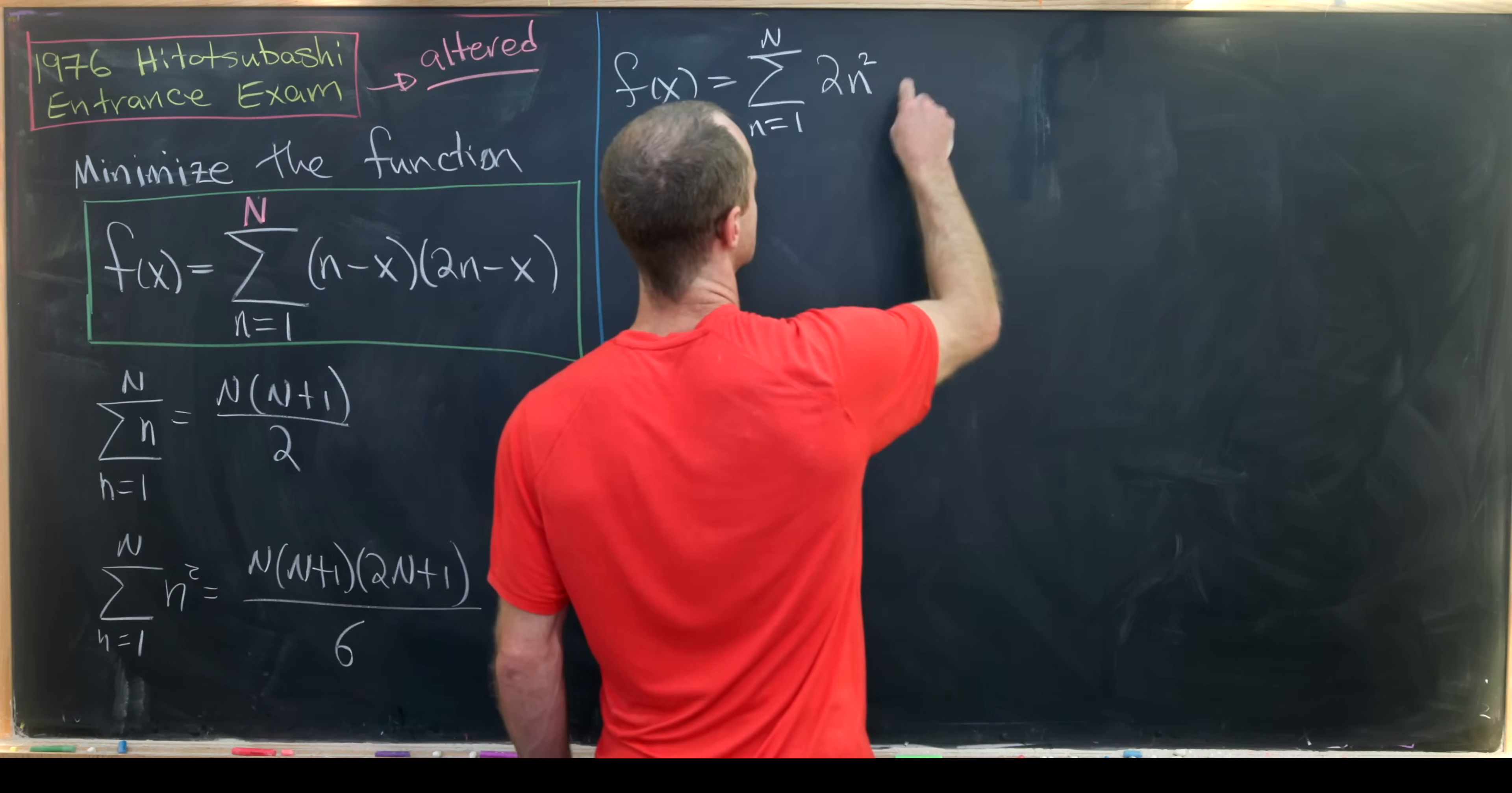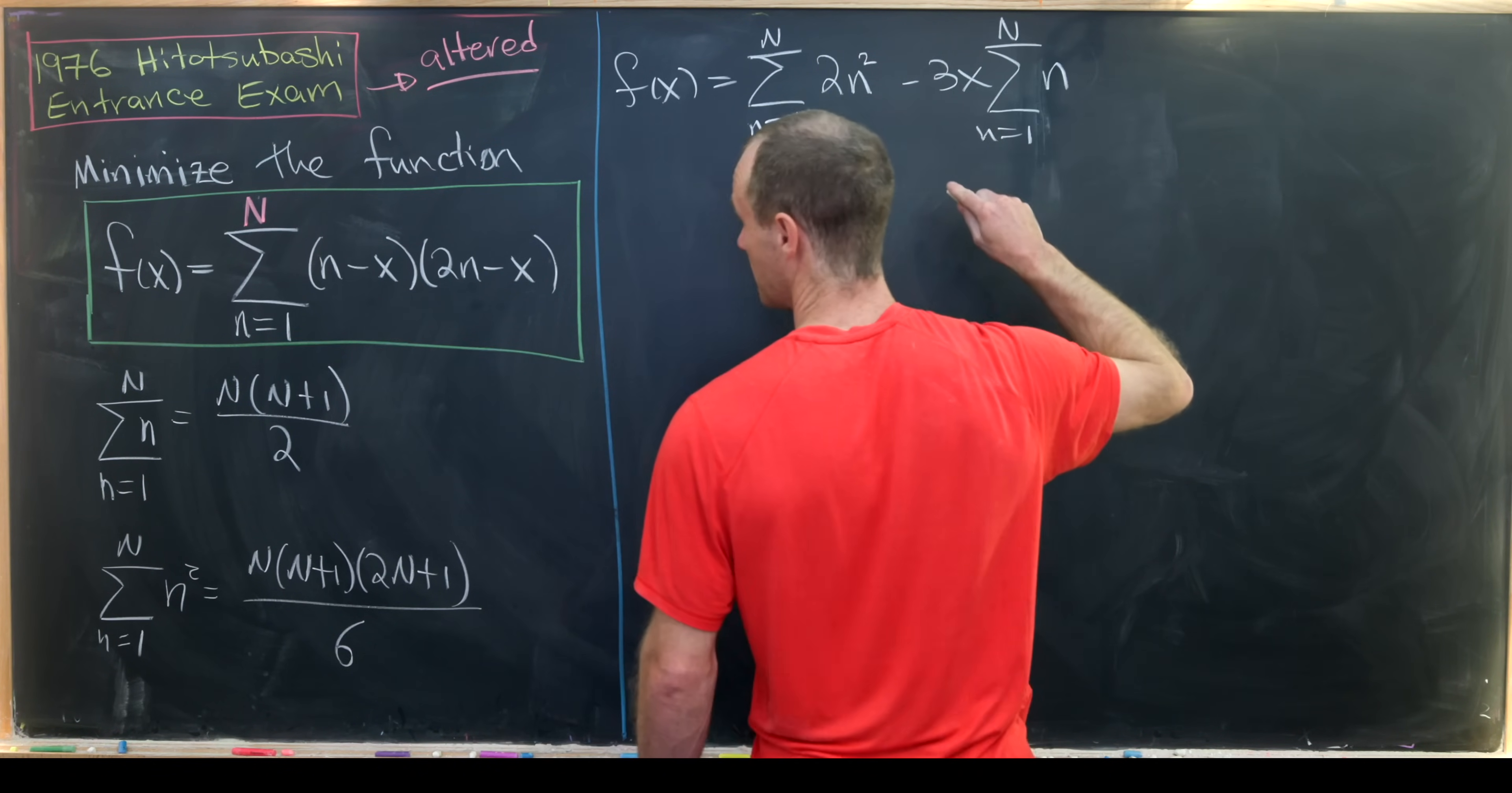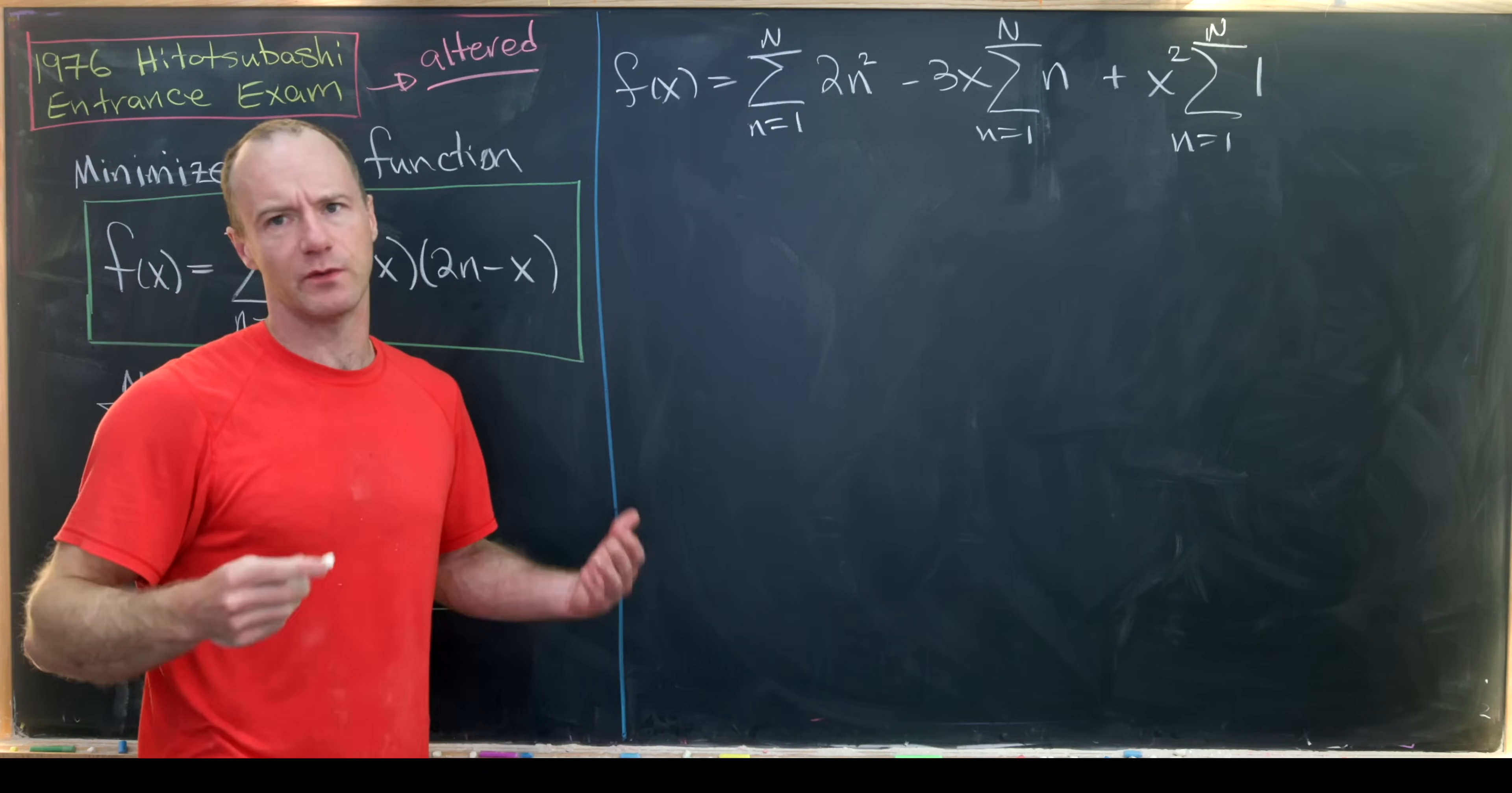So let's start with the same step we'll multiply this out. This will give us the sum as n goes from 1 to capital N of 2n² minus 3x times the sum of n and then finally plus x² times the sum of 1. So this is essentially a couple of steps in a row that we did before.